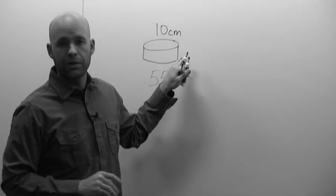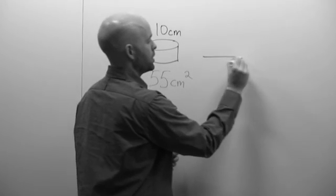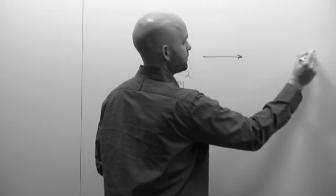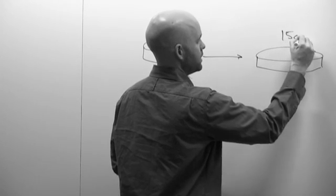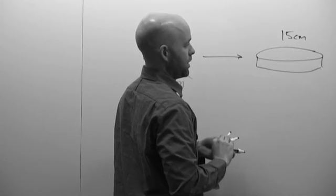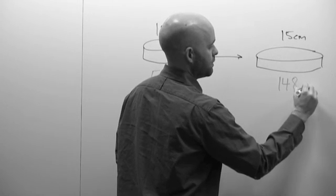Now let's say we wanted to split from our 10 centimeter dish to a larger dish, like a 15 centimeter. In this case, the 15 centimeter dish has a growth area of 148 centimeters squared.